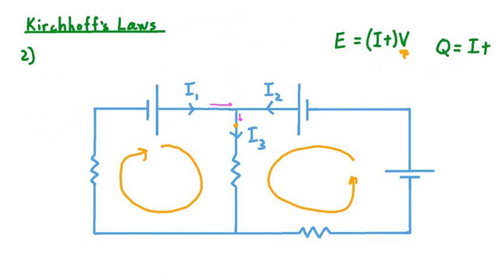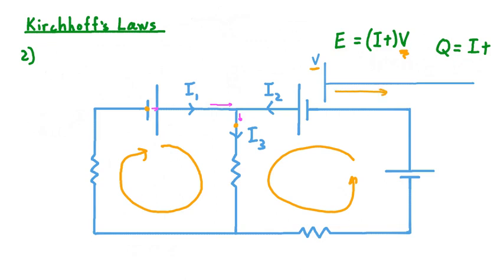Let's pick one of these two loops and follow an individual charge as it moves all throughout the loop. Let's say our charge starts at the negative terminal of our voltage source. As this charge moves across our voltage source, it experiences a rise in electrical potential. If we sketch out a graph of potential difference in this loop — where movement along our horizontal axis corresponds with clockwise motion around this loop — we can say that as a charge moves across our voltage source, it experiences a gain in potential. Then as the charge continues to move clockwise and becomes part of the current I3, there's no gain or loss of electrical potential, so we represent that with a horizontal segment.